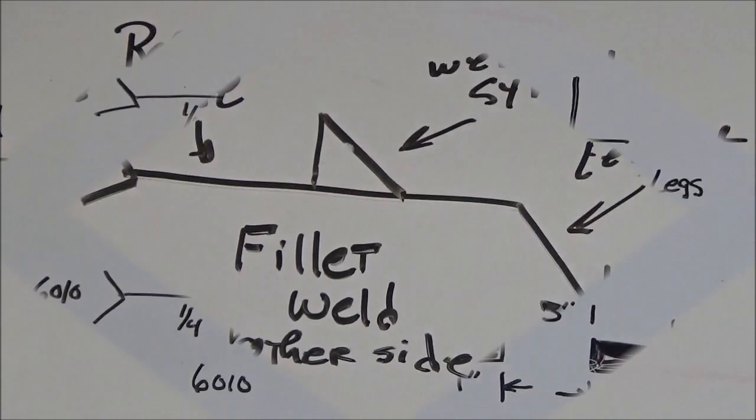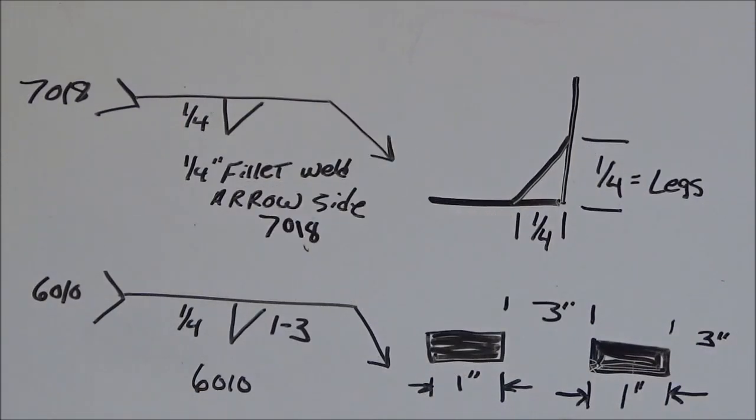Now, let's take a look at another fillet weld. Alright, now let's take a look at another fillet weld. This fillet weld is one quarter inch equal legs. It's a quarter inch fillet weld on the arrow side.